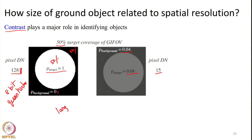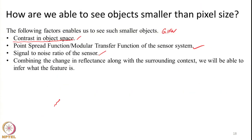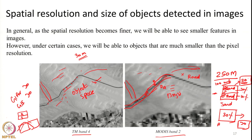The larger the contrast difference — the larger the reflectance difference between the background and the feature of interest — the more clearly we will be able to identify the object. That is what happened in the example from the last class: there is a very large difference in reflectance between the sand and the road, allowing us to interpret the road properly even in a coarse resolution image such as MODIS.